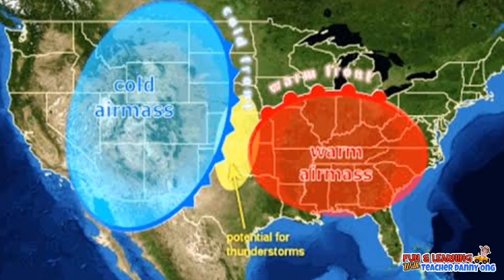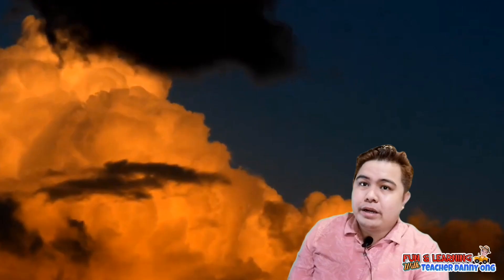Cold fronts are a cold air mass which moves under a warm air mass. Warm air is pushed up along the front. Towering clouds may form and storms may break out. During storms, lightning also flashes.